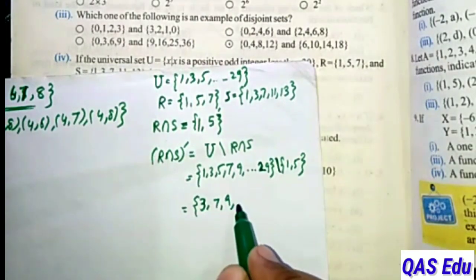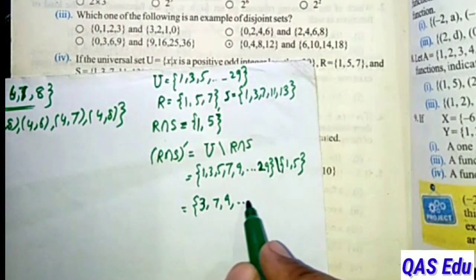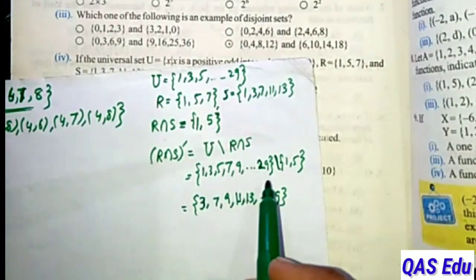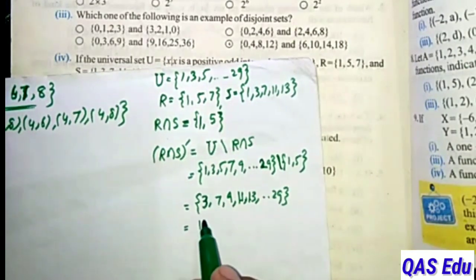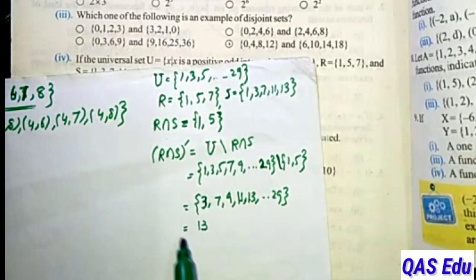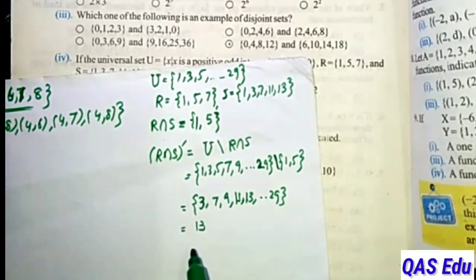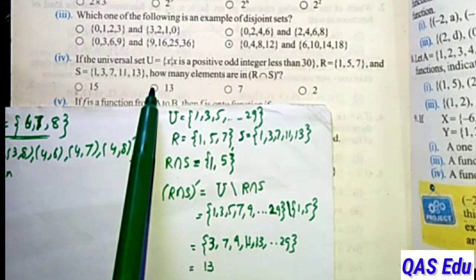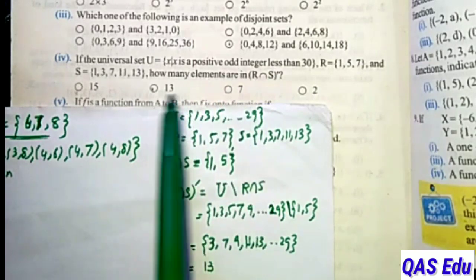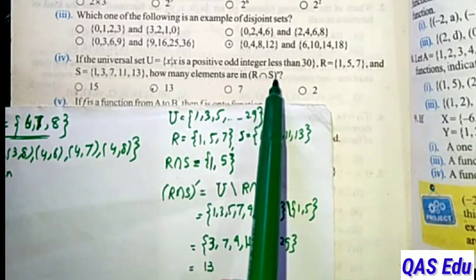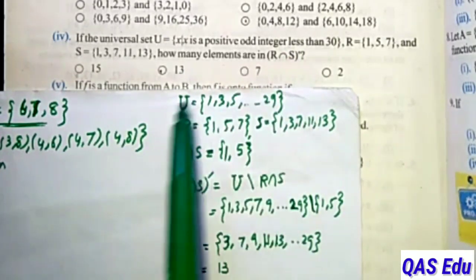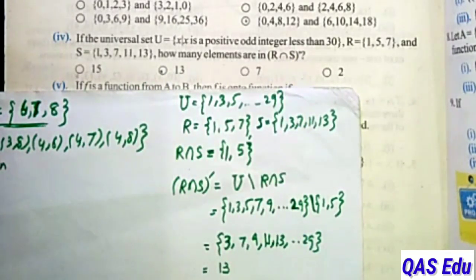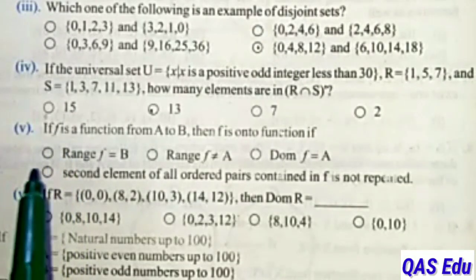Subtracting those 2 elements: {3, 7, 9, 11, 13... 29} - we remove 1 and 7, leaving 13 elements. So (R∩S) complement has 13 elements. The correct option is B.